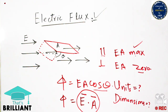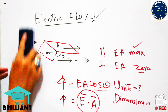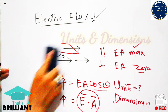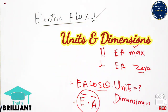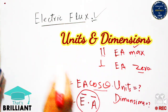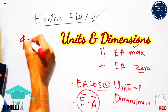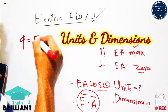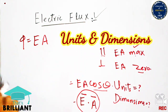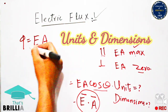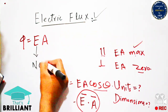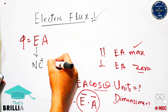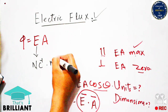Finally, we calculate the units and dimensions of electric flux. Phi equals E times A, where E has units of newtons per coulomb and area has units of meter squared.